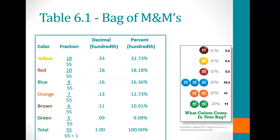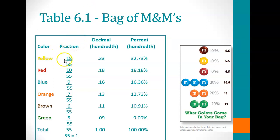We have a bag that has a total of 55 M&M's inside, in different colors: yellow, red, blue, orange, brown, and green. The top number shows how many M&M's we have of each color. Recall that there's a total of 55 M&M's in the bag, so for a fraction, we take the number of M&M's of that color divided by the total.